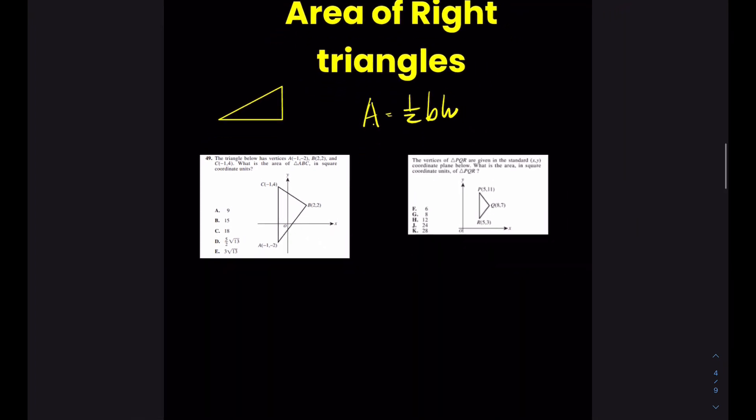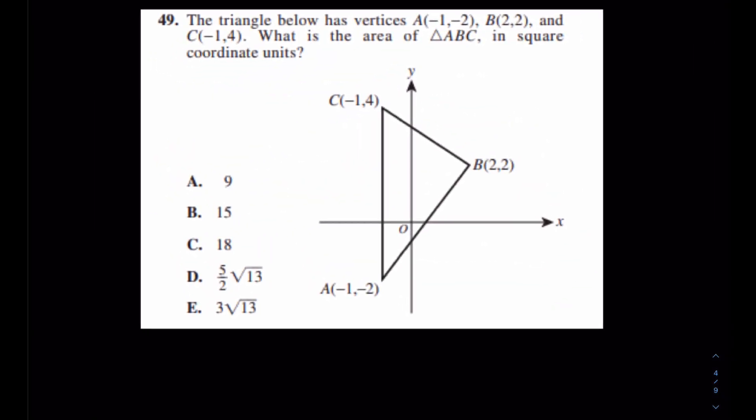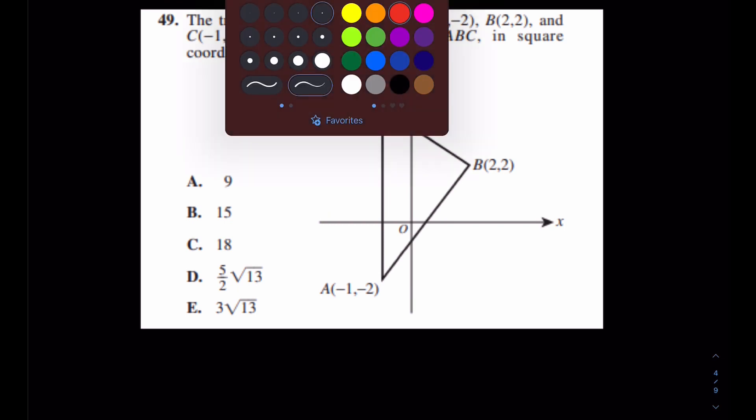The idea here for these questions, this one here is a 49, and I think this one's a 58. Towards the end of the ACT, they're not easy. But what you'd see for this one is that you can always make them a right triangle. Check this out.